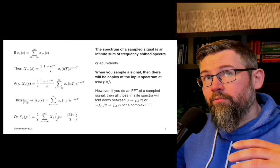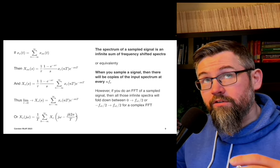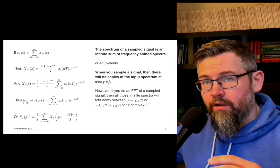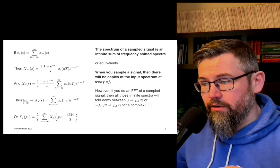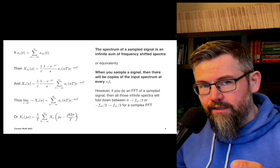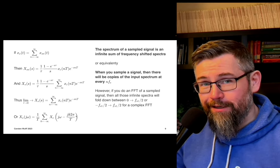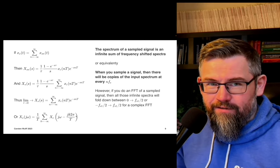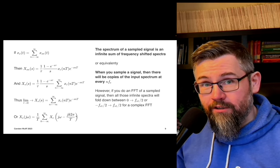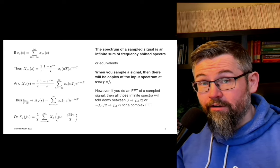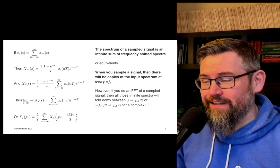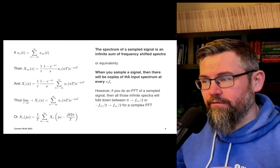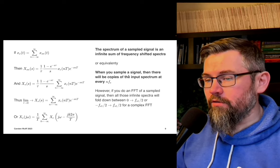It turns out that when you go from a continuous-time, continuous-value signal to a discrete-time, continuous-value signal, you end up copying the spectrum at every multiple of the sampling frequency. The maths here is not the most important part — what is important is the consequence: when you sample a signal, you get copies of the input spectrum at every integral multiple of the sampling period. We can actually emulate this in Python.